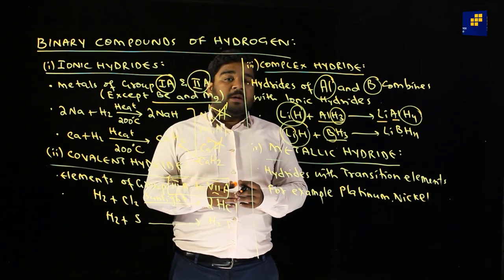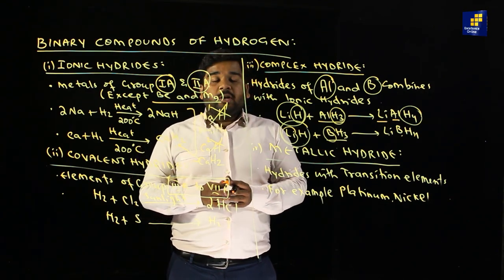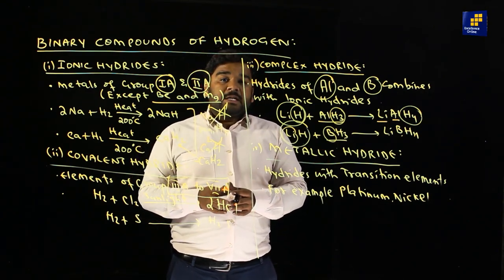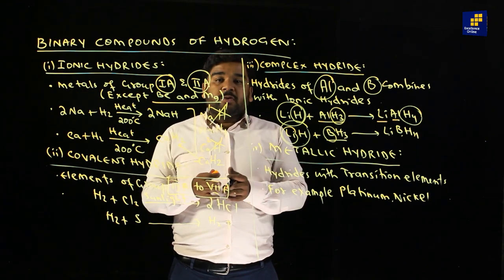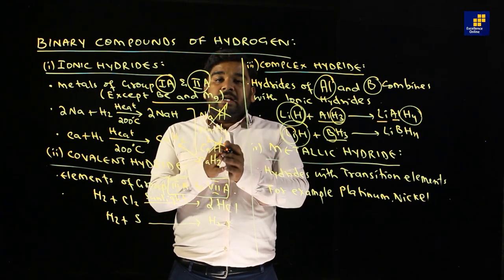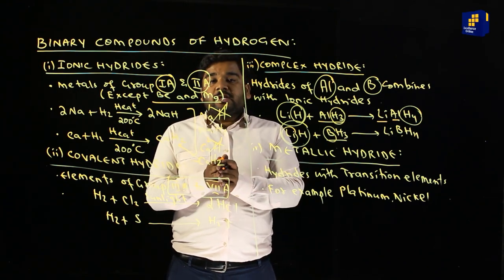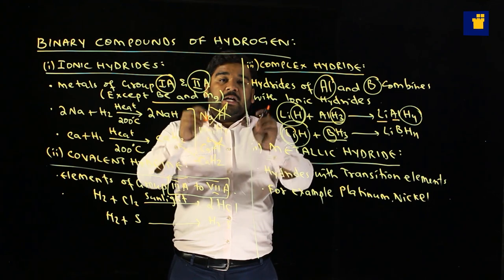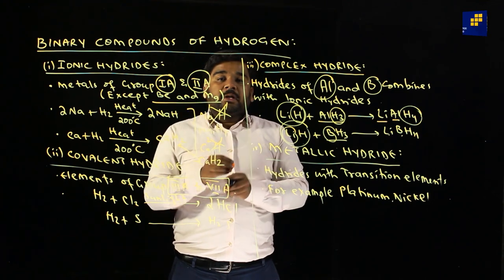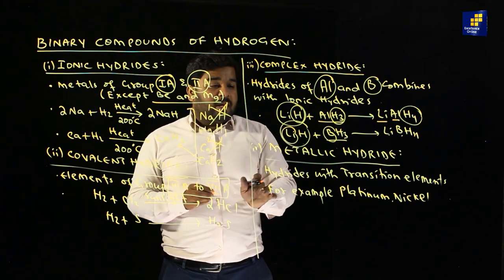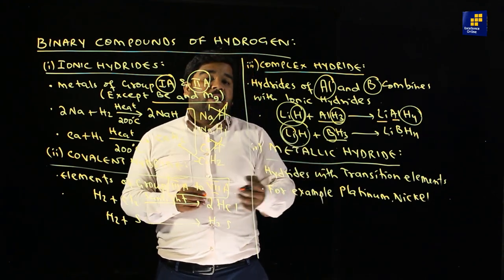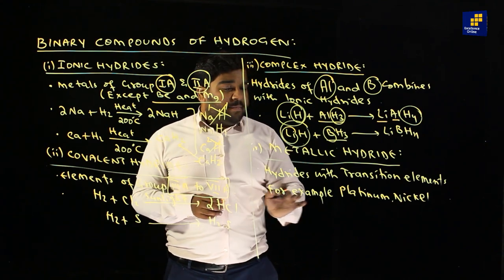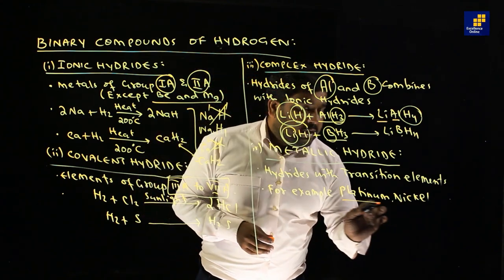The third type is metallic hydride. Transition metals have interstitial spaces, and hydrogen occupies these interstitial spaces to form a bond. This bond is called a metallic hydride or transition hydride. Examples include platinum and nickel.